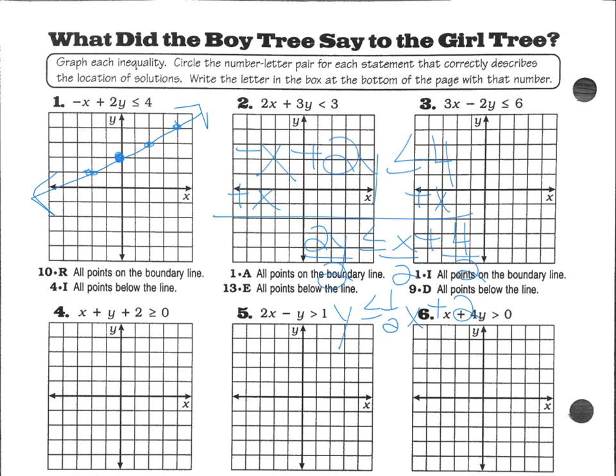And then I have to decide, does it go above or below the line? If I plug in 0, 0, I get 0 is less than or equal to 0 plus 2, which is true, which means I shade below the line. That's the easy part.